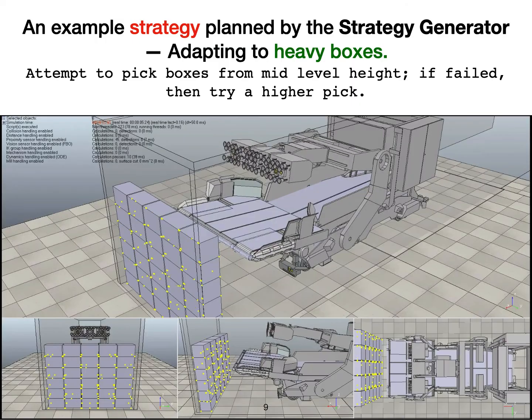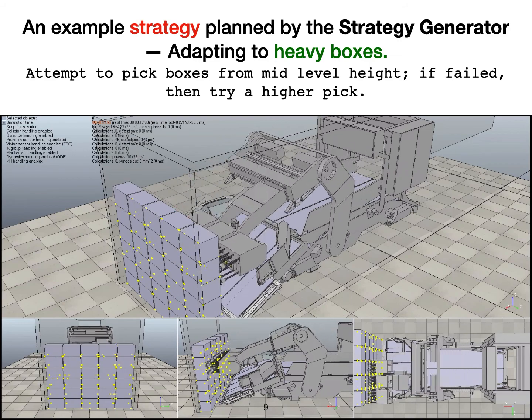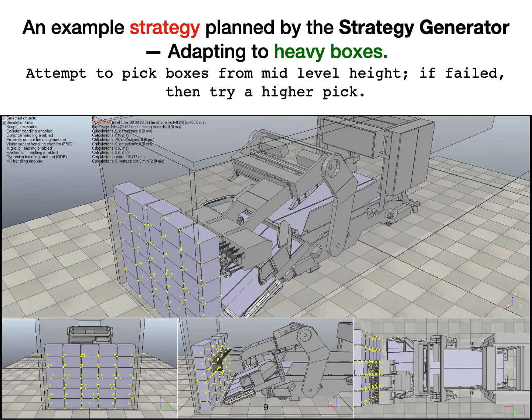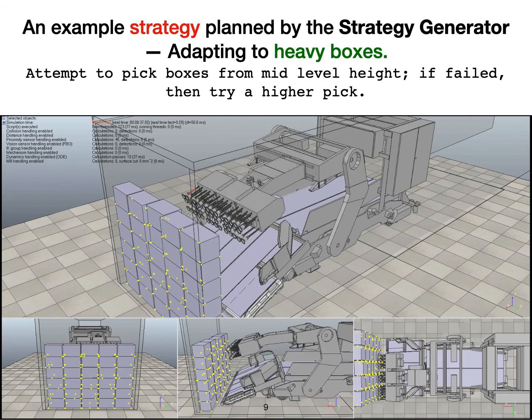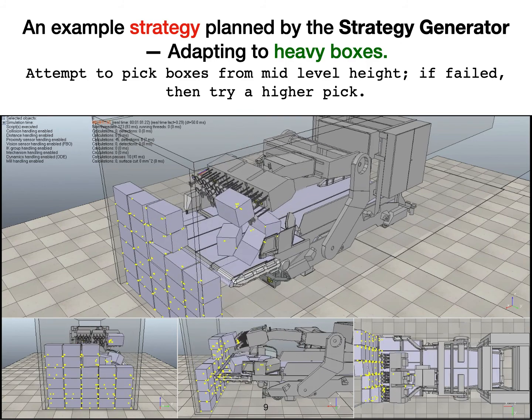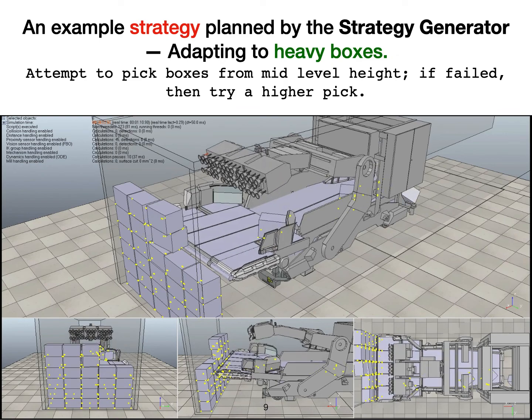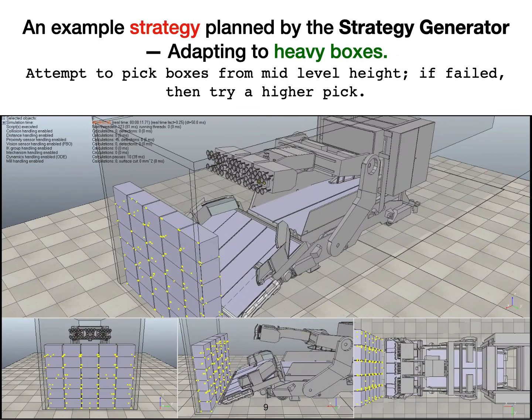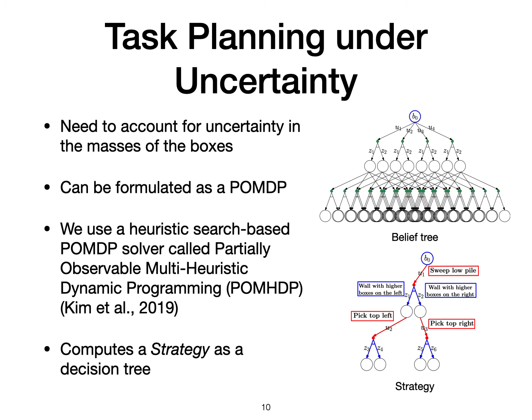For instance, consider a plan where the robot tries to pick boxes from a mid-level height. As the boxes are heavy, the suction arrays fail to grab the boxes and the plan is ineffective. At this point, we would like to adapt and execute a plan that picks boxes from a larger height so that the suction array can grab them without difficulty. This is an example of a robust plan or strategy that our task planning module generates. The task planning module accounts for uncertainty in the masses of the boxes. This is formulated as a POMDP that is solved using a heuristic-based dynamic programming solver. In the process of solving it, the module constructs a belief tree using the simulator, as shown on the top right. The belief tree considers all possible outcomes and results in a robust plan or strategy as shown on the bottom right.